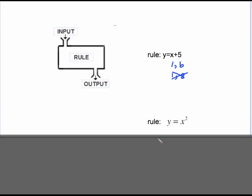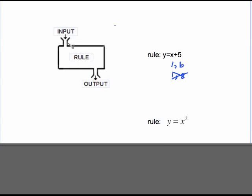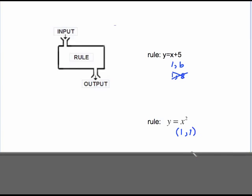However, if I had this rule, y equals x squared, if I put 1 in there and I square it, 1 squared is 1. If I put negative 1 in there and square it, negative 1 squared is a positive 1. That's perfectly legal for the y values to repeat.